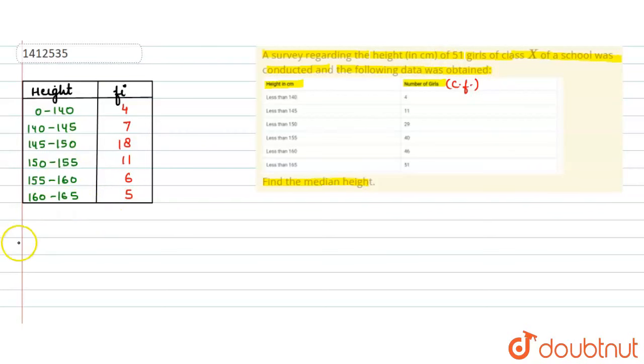This is the median formula. Now, because we have question already n value given is 51. So, if you take n by 2, it will be 51 upon 2. And the answer will be 25.5.